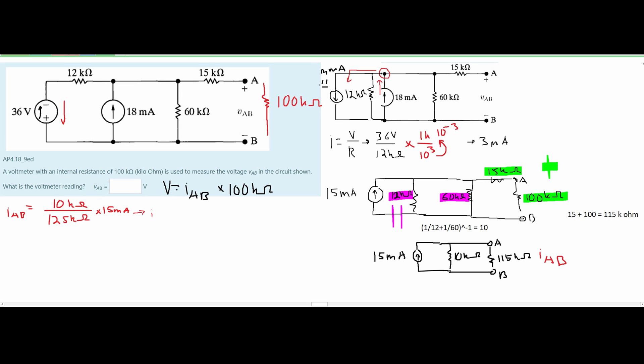If we do all of this we're going to get that our I is equal to 1.2 milliamps.